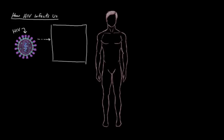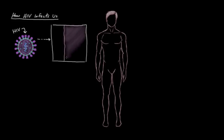Let's start by drawing some skin here. Actually, let's say this is mucous membrane — the soft, moist area that's not quite as protected as everywhere else on your body covered by normal skin. You'd find these mucous membranes inside your mouth, your throat, your nose, inside the vagina, at the tip of the penis, in the rectum, or anywhere in your digestive tract, really.